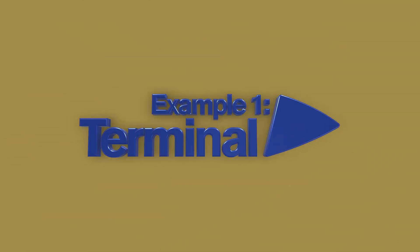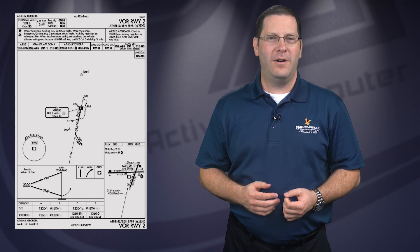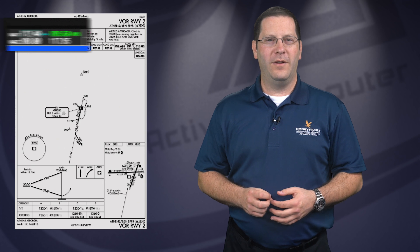Now that we've discussed VOR approaches in general, let's look at a couple of examples. We'll start with the VOR 2 approach into Athens, Georgia. First things first, we need to tune and identify the Athens VOR. The frequency 109.6 will need to be tuned into your active NAV frequency box. Verify the correct frequency by cross-checking it with the identifier displayed in the frequency box of the approach plate, listed as AHN.